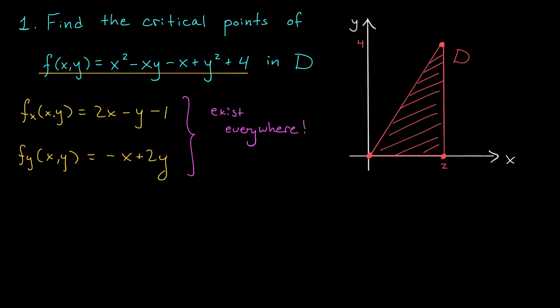We'll start with the simpler expression, which in this case is fy. If fy is equal to 0, then minus x plus 2y is 0. Or in other words, x is 2y.